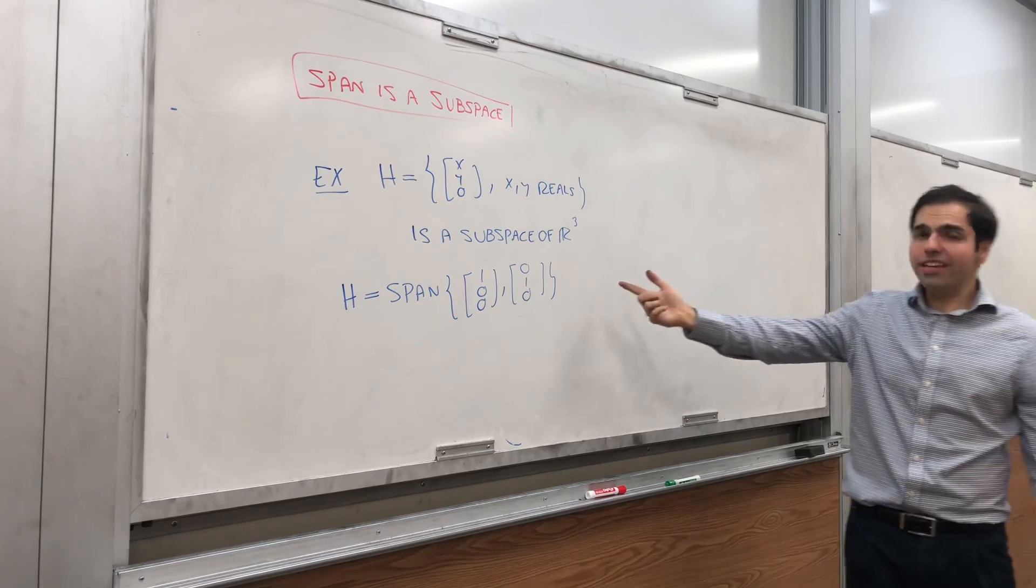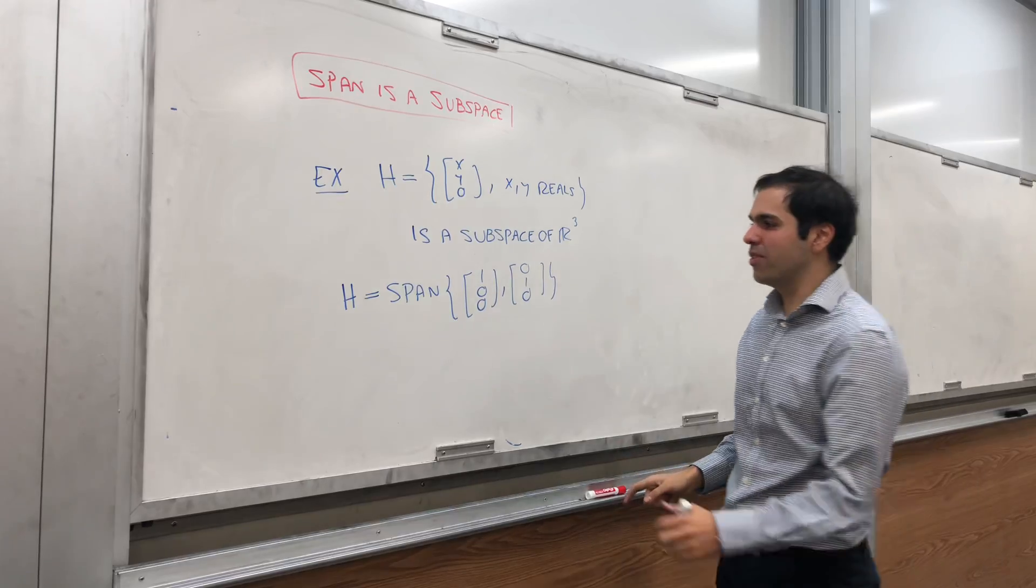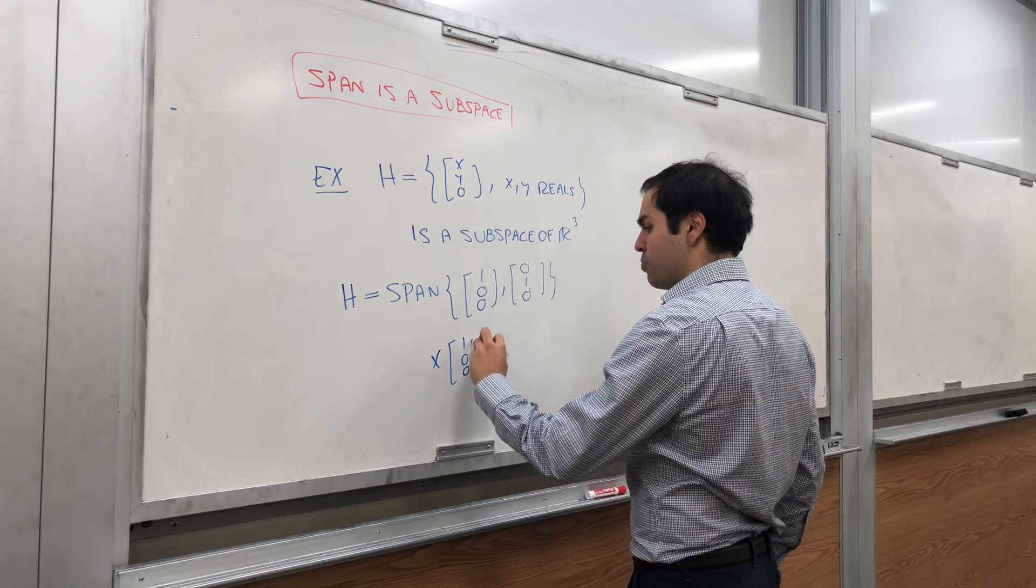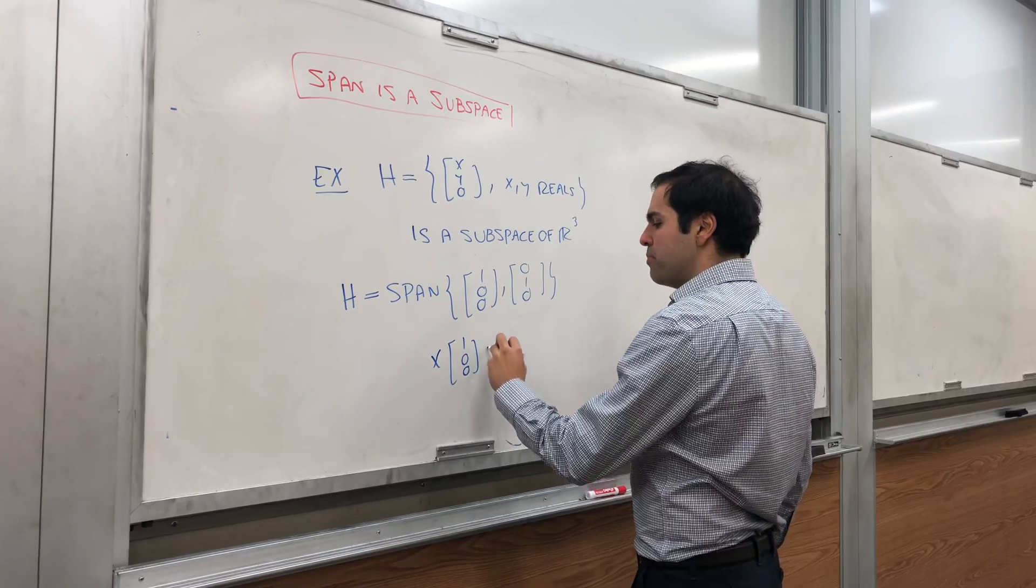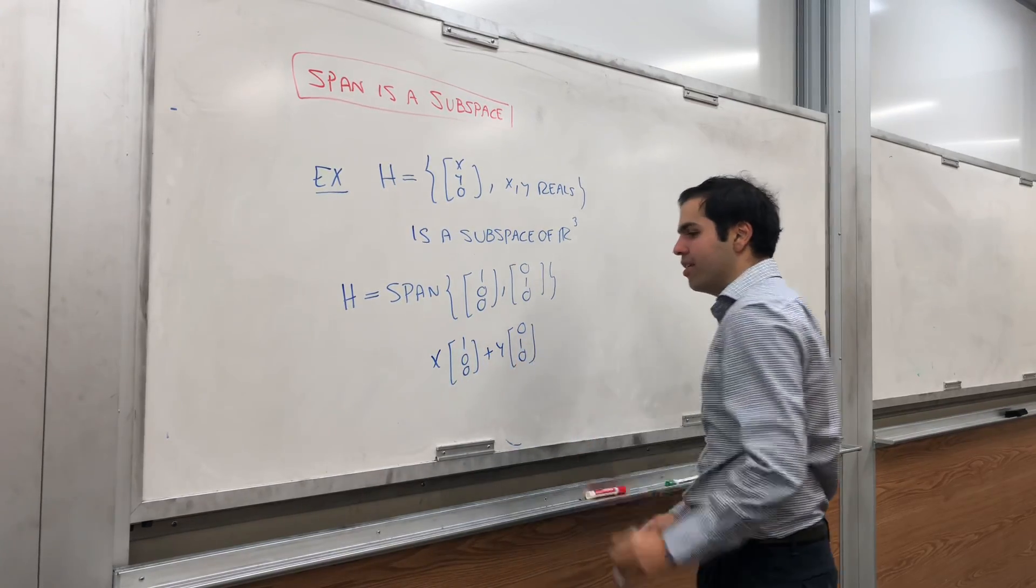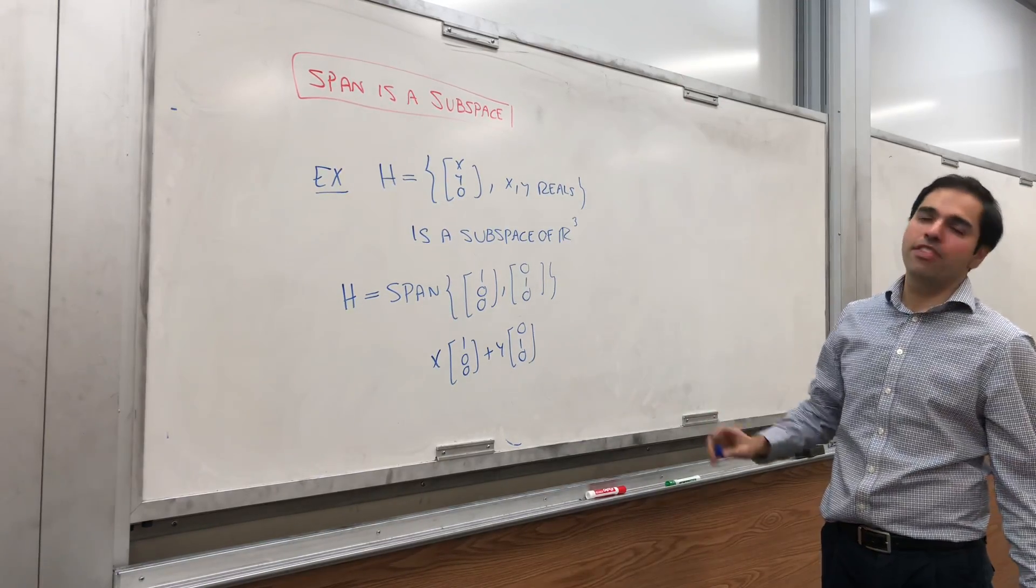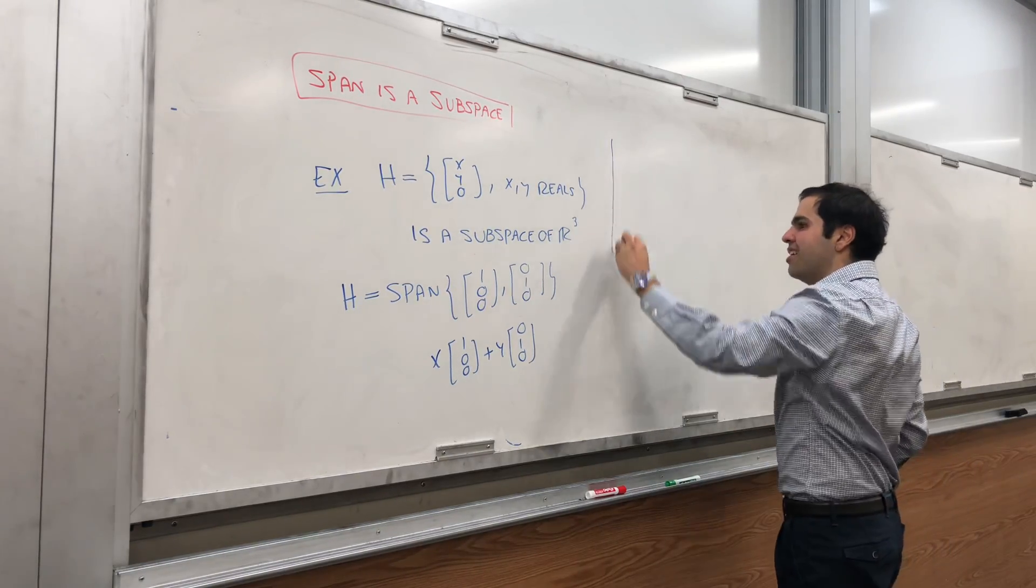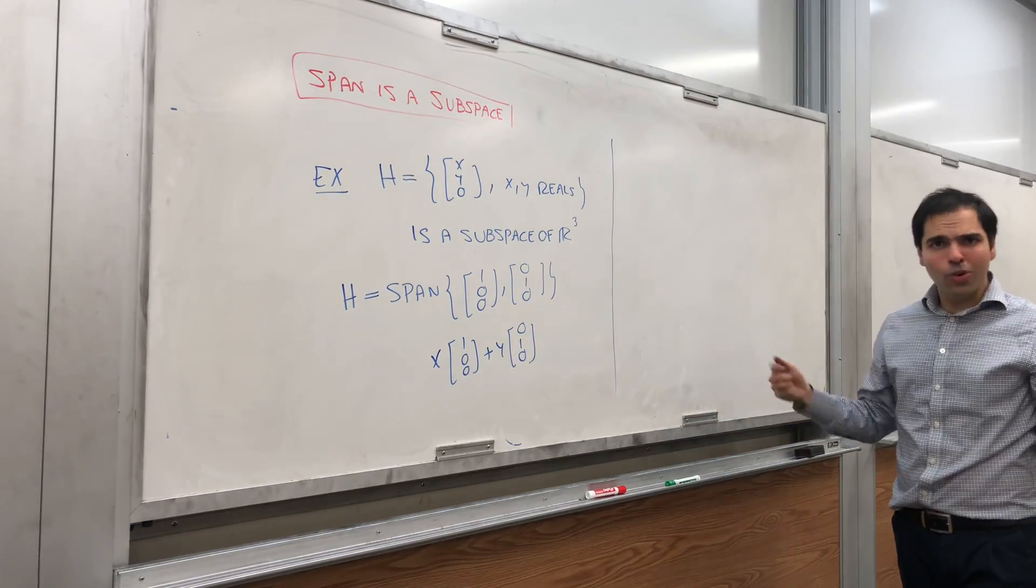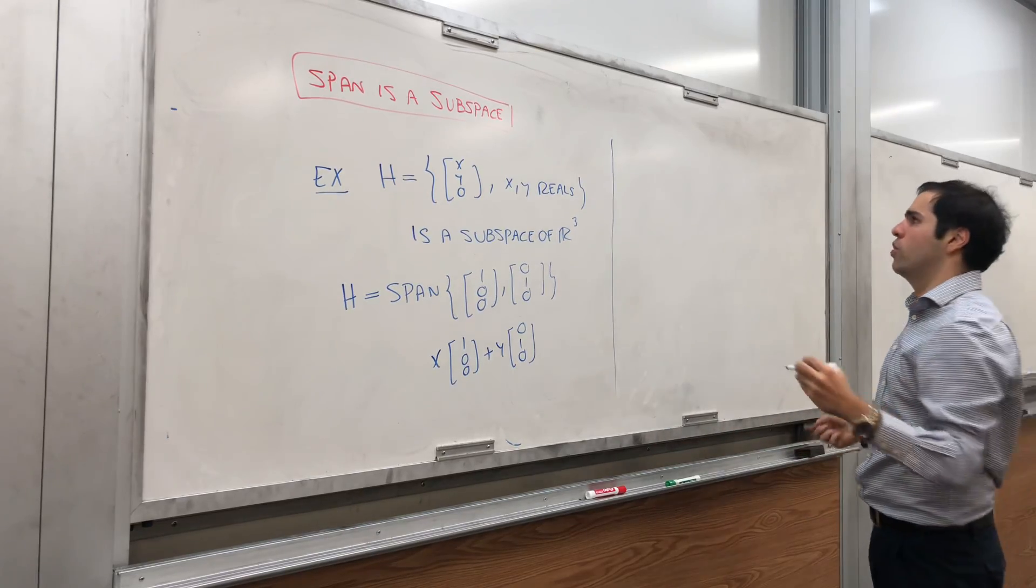Now, what is the span? The span is just a set of all linear combinations of 1,0,0, and 0,1,0. So set of expressions of the form x times 1,0,0 plus y times 0,1,0, where x and y are real numbers, and that's precisely the same thing as here. So that's why it's a very cool tool to show that something is a subspace. And now let me actually show this to you.